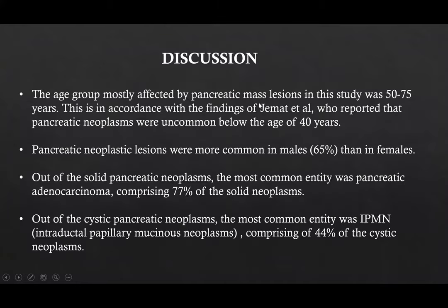The age group mostly affected by pancreatic mass lesions in this study was 50 to 75 years, which is in accordance with the findings of Jamaat et al., who reported that these were uncommon below the age of 40 years. Pancreatic neoplastic lesions were more common in males. Out of the solid pancreatic neoplasms, the most common entity was pancreatic adenocarcinoma comprising 77%, and out of the cystic neoplasms the most common entity was IPMN comprising 44%.